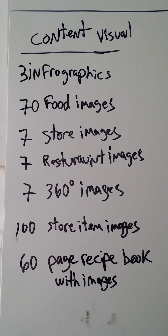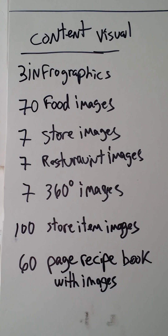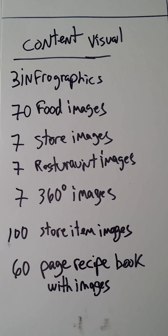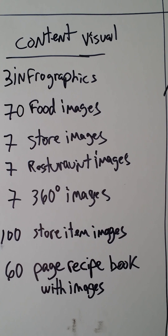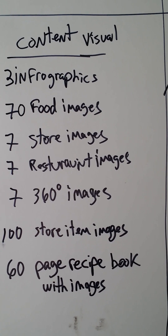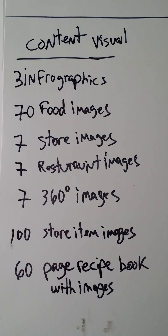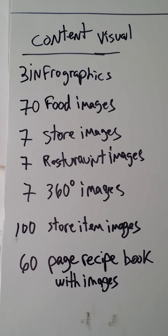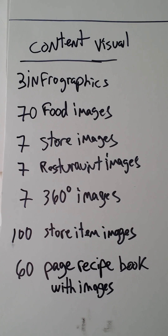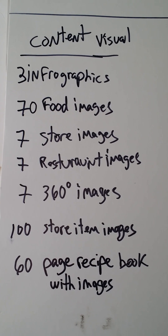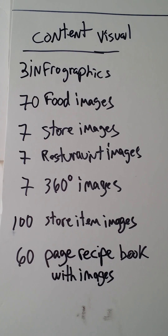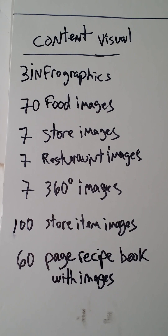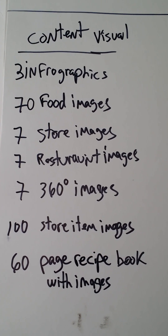The content for a restaurant includes three infographics — that's a page with a workflow showing how this goes, basically a visual representation of an outline. You'd also have 70 food images, seven store images, seven restaurant images, seven 360-degree images, and 100 store items in a 60-page book with images.